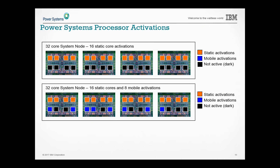The next chart shows how processors get turned on. If you have a 32-core system node and you turned on 16 activations, the hypervisor determines how to turn those 16 on — it could turn on four per module or eight on one module. It has to do with the hypervisor looking at how to turn on cores to give you the best affinity for your LPARs.